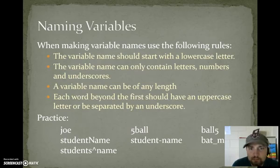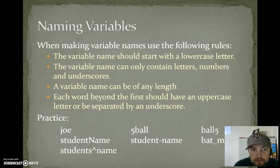Naming variables. When making variables, use the following rules. The variable name should start with a lowercase letter. The variable name can only contain letters and underscores. A variable name can be of any length. Each word beyond the first word should have an uppercase letter or be separated by an underscore. You could do both if you liked.